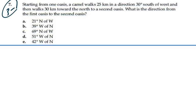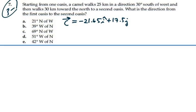From the previous problem, we got the resultant vector of these two vectors, and we found that that vector C was equal to negative 21.65i plus 17.5j kilometers.